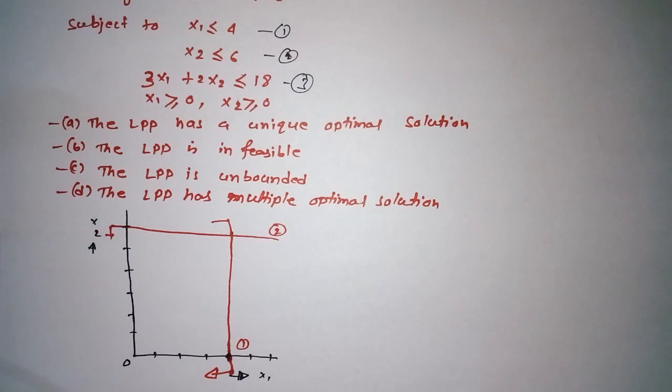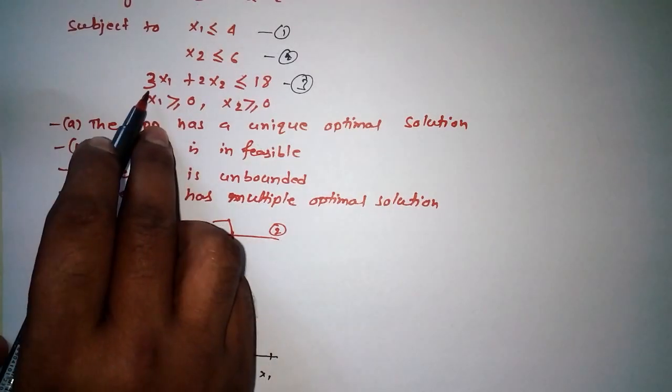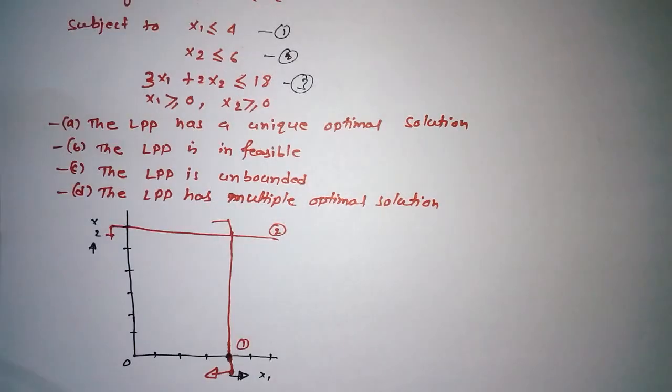Now let's come to equation 3, which is most important. We have to find out the values of X1 and X2 from equation 3. That is: 3X1 + 2X2 ≤ 18.